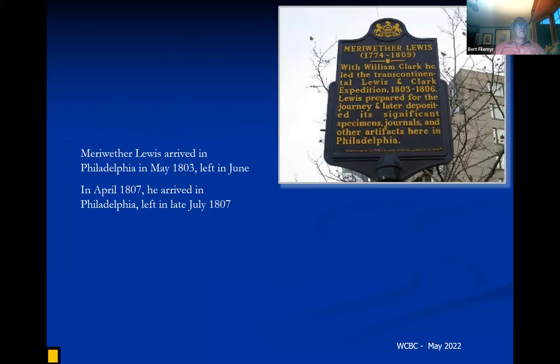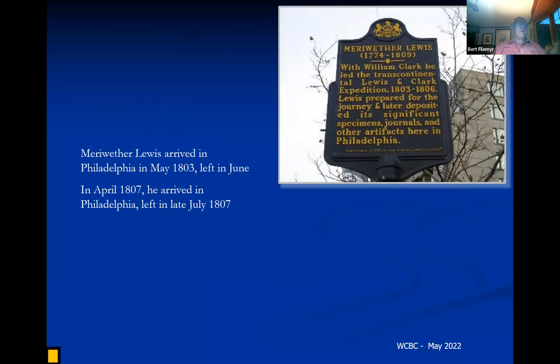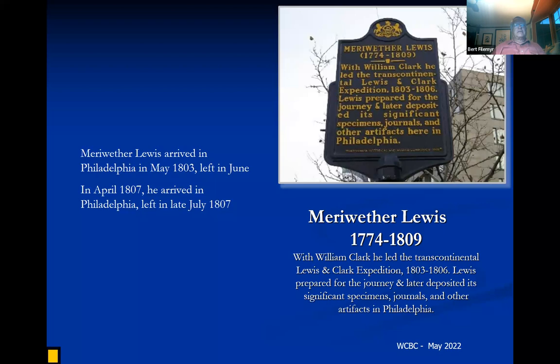Lewis's Woodpecker is named for Meriwether Lewis. He arrived in Philadelphia in 1803 — though he wasn't really a Philadelphia person — and did extensive preparation here before the Lewis and Clark Expedition, as Philadelphia was the center of the scientific world in North America at the time. Outside the Academy of Natural Sciences there is a plaque noting that Lewis prepared for the journey and later deposited significant specimens, journals, and artifacts in Philadelphia. The Academy and the American Philosophical Society hold many original items from the Lewis and Clark Expedition.